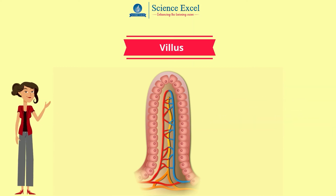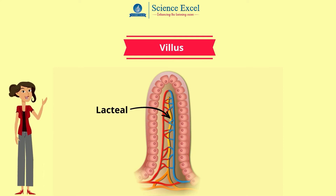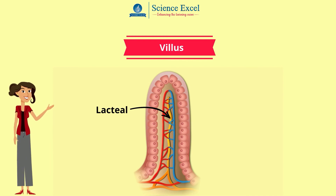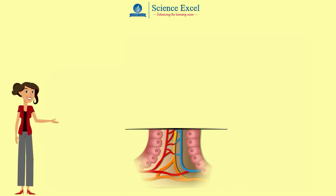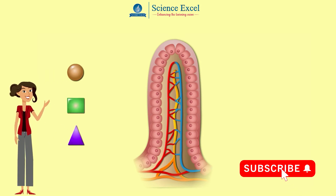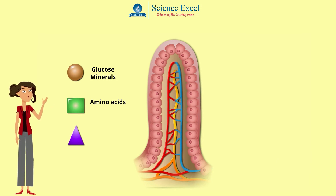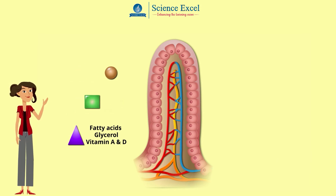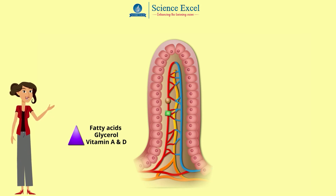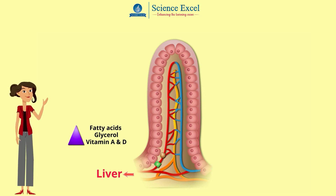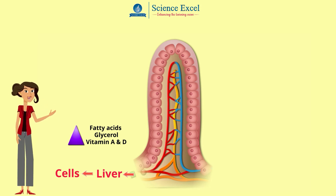Each villus has a lymph vessel called a lacteal in the center. The lacteal is surrounded by a network of blood capillaries. Water-soluble molecules such as glucose, amino acids, minerals, as well as vitamins such as vitamin C are absorbed through the walls of the villi into the blood capillaries by diffusion and active transport. After entering the bloodstream, these are taken to the liver by the hepatic portal vein and then to every cell of the body.